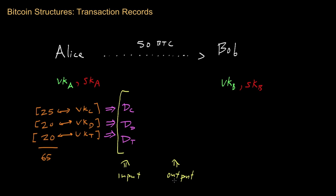In the output portion, Alice has to include a list of recipients for her Bitcoins. Since Alice wants to transfer Bitcoins to Bob, she has to specify Bob's identity in the system — his public key, VK_B. She also has to record how many coins she wants to transfer to Bob, and as we said, she wants to transfer exactly 50 Bitcoins to Bob, so she specifies the number 50.